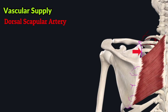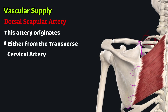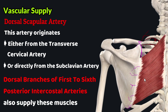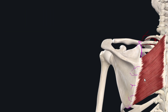The dorsal scapular artery supplies the rhomboid muscles. This artery originates either from the transverse cervical artery or from the subclavian artery. The dorsal scapular artery runs down the medial border of the scapula and gives off several branches which supply the rhomboid minor and major muscles. Additionally, the dorsal branches of the first to sixth posterior intercostal arteries also supply the rhomboid muscles.